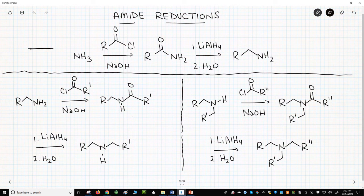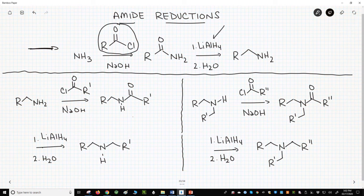Across the very top of the screen is a reaction sequence. We have ammonia reacting with an acid chloride followed by a reduction with lithium aluminum hydride. The product is a primary amine.